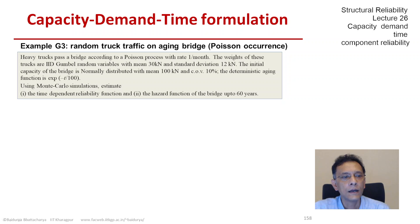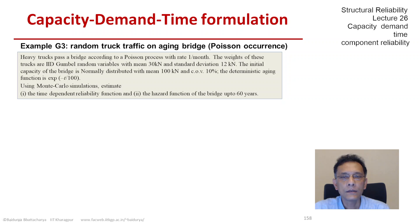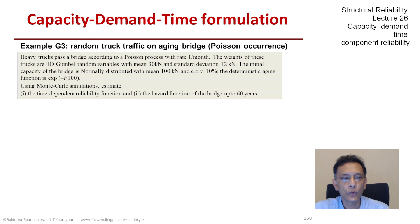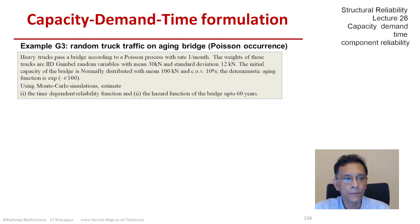This is the same problem G2 that we solved before, but there is one important difference: the distribution of capacity, which was normal with mean 100 kilonewtons and COV of 10 percent, is now the initial capacity, and there is the aging function exponential minus T over 100.